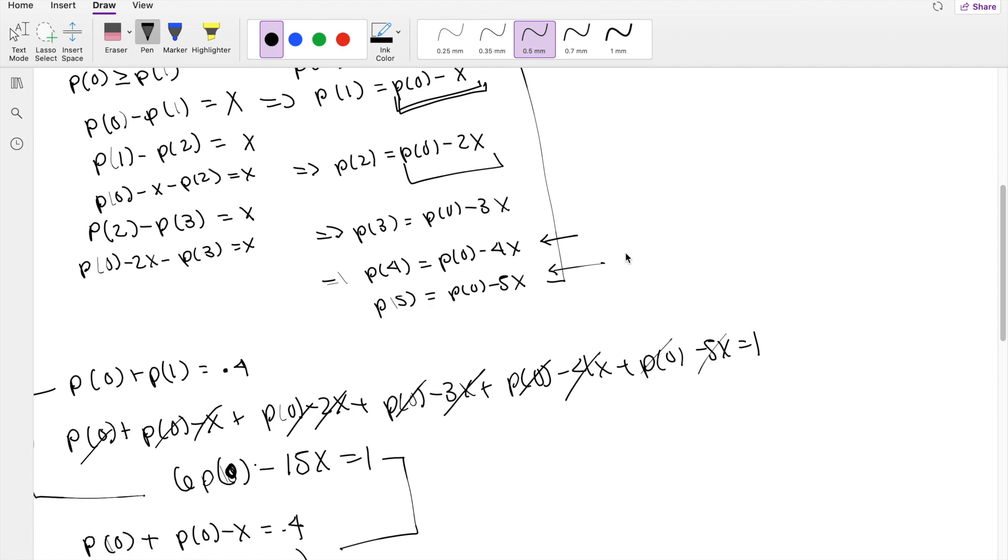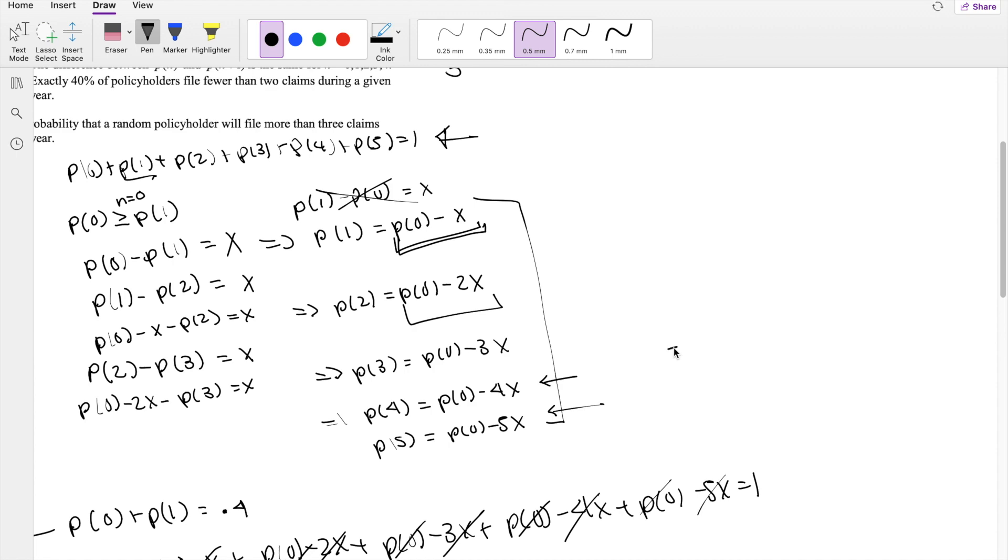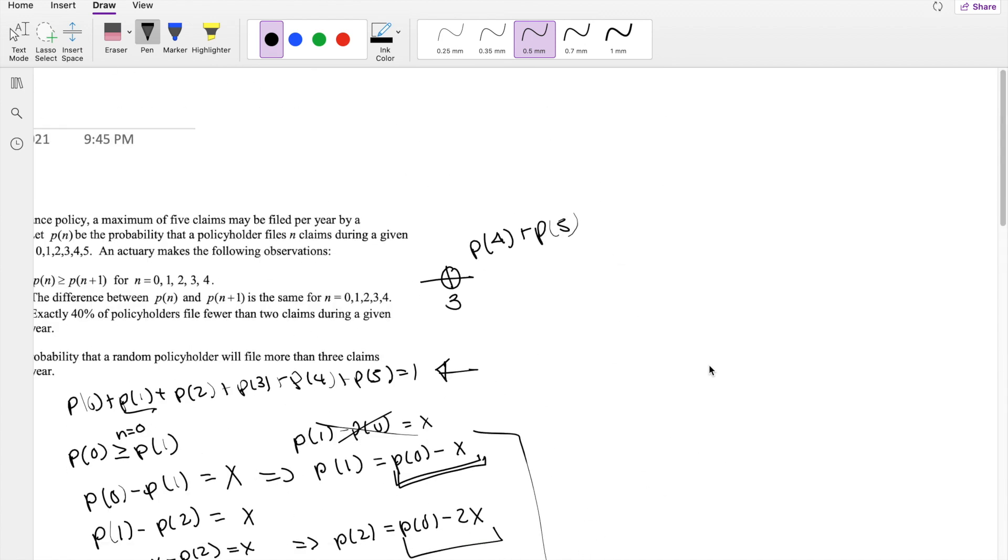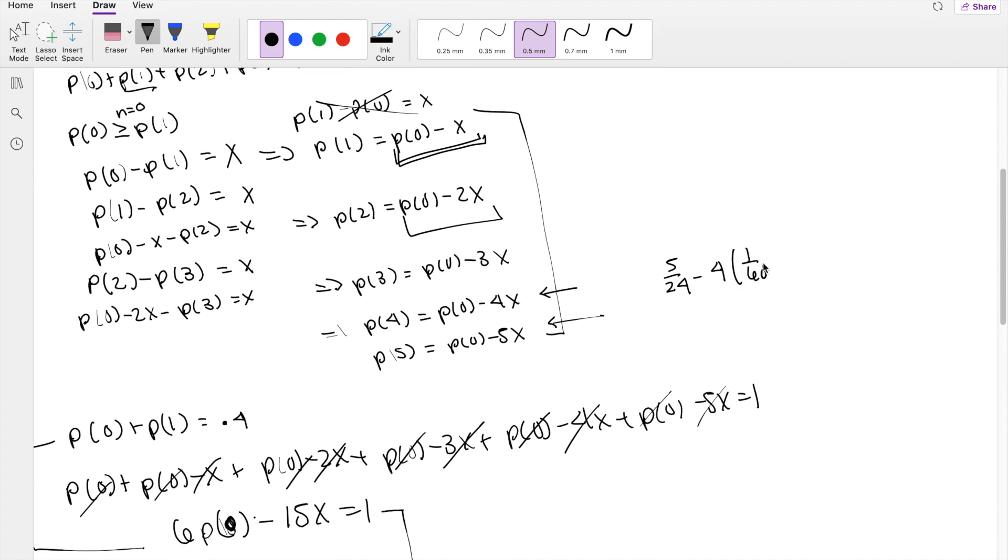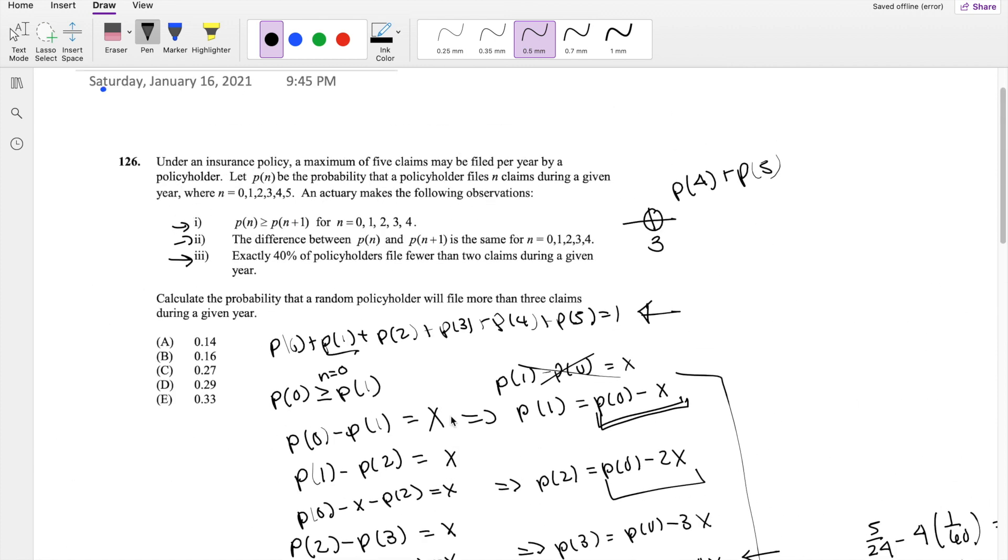So that's 5 over 24 minus 4 times x, where x is equal to 1 over 60, and then likewise, this is going to be 5 over 24 minus 5 times 1 over 60. So these two here is equal to 17 over 120 and 1 over 8. So adding up the probability of 4 and probability of 5 together, you get 17 over 120 plus 1 eighth, which is equal to 4 over 15, or approximately 0.2667, which is our answer C.